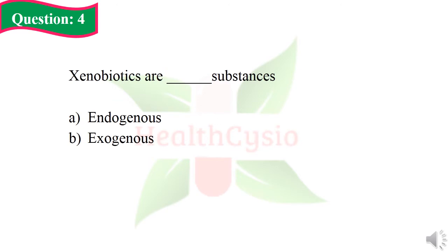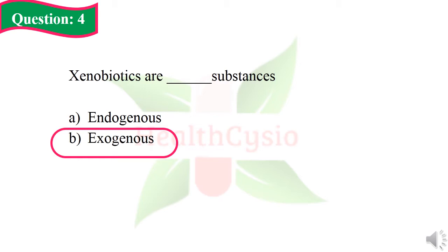Question 4: Xenobiotics are what type of substances? Option A: endogenous. Option B: exogenous. The right answer is Option B, exogenous. Xenobiotics are exogenous substances.